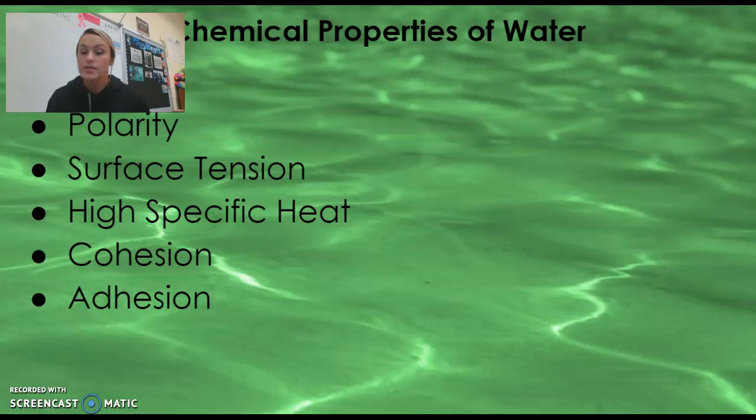So just a reminder, polarity basically just means those electrons are not shared equally, thus giving water its electronegative nature. Surface tension is how hard it is to break the surface layer of water. So water almost creates a thin film at the surface, and that has to do with cohesion and adhesion as well.